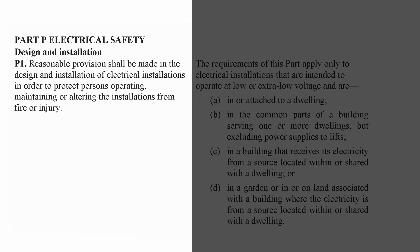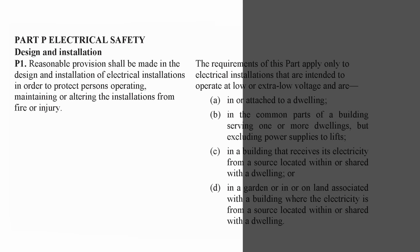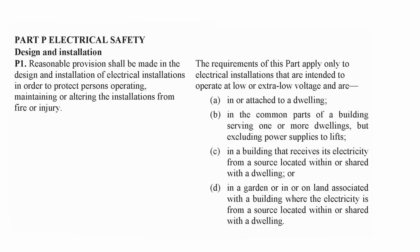Part P is actually incredibly simple. Part P1 states that reasonable provision shall be made in the design and installation of electrical installations in order to protect persons operating, maintaining or altering the installations from fire or injury. That's the whole extent of Part P — essentially just making sure it's safe, not going to catch fire or cause injury. It applies to dwellings, common areas of flats, and any buildings that receive power from a dwelling, such as garden sheds and greenhouses.